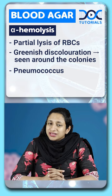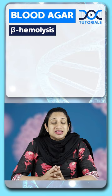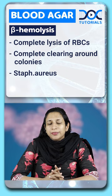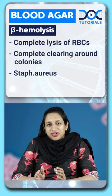Beta hemolysis is because of complete lysis of RBCs, seen in the form of complete clearing around the colonies, and is very typically seen with Staph aureus. So to summarize: pneumococcus is always alpha hemolysis, and staphylococcus is associated with beta hemolysis.